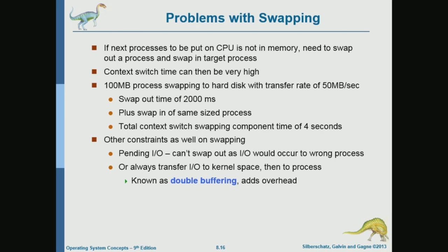A hard disk transfer rate — it depends on the system and whether we are talking about solid state. Solid state is much faster than magnetic disks, but for a magnetic disk, 50 megabytes per second is typical. It's not going to be an order of magnitude faster than this.